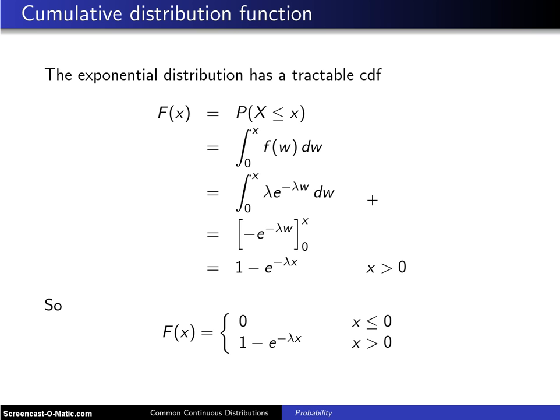And that particular integrand is of the form e to the u du, if you just had a negative out front here. So it integrates to negative e to the minus lambda w evaluated from 0 up to x. When 0 gets plugged in you get a 1, the negatives cancel. When x gets plugged in you get e to the minus lambda x.